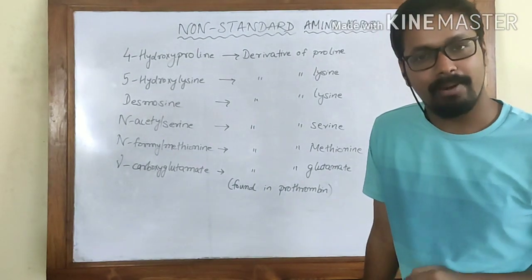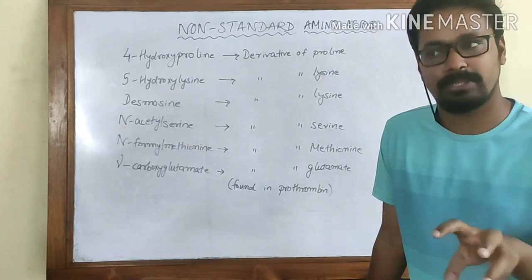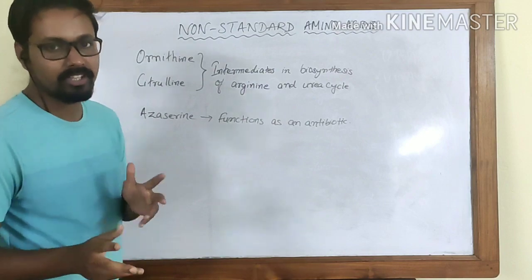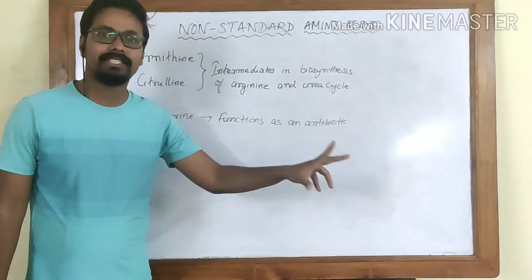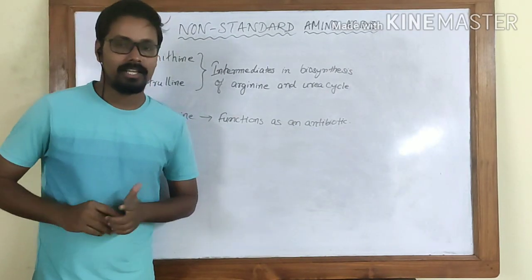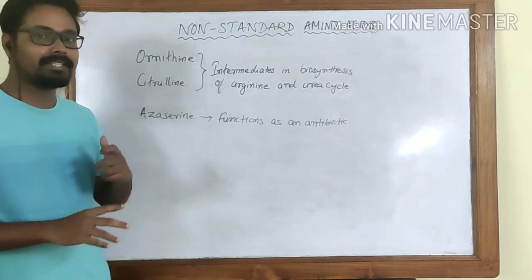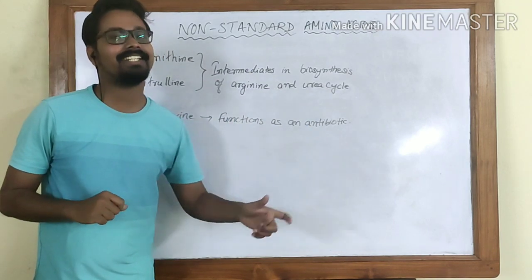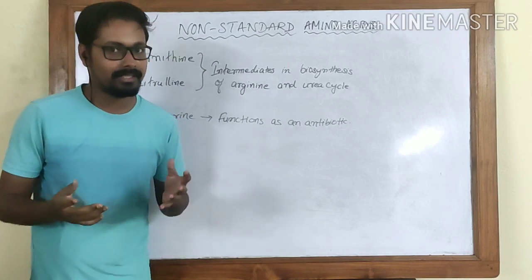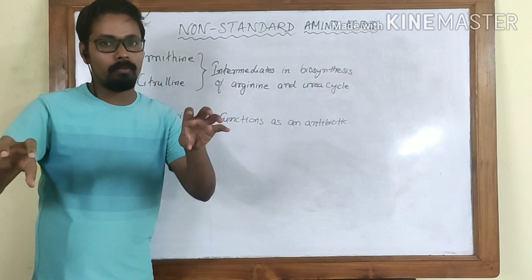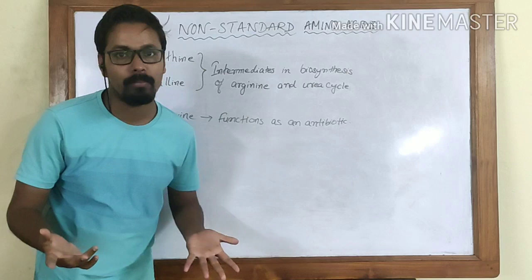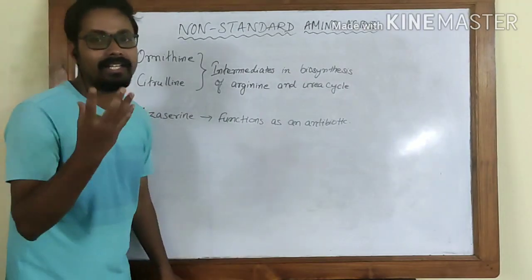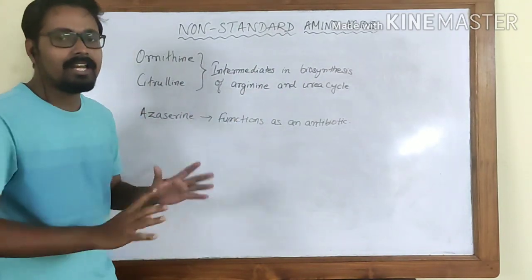Now let us look into some other non-standard amino acids that have specific functions for specific areas of our body. Ornithine and citrulline are key intermediates in the formation of arginine and also in the urea cycle. If you have studied the urea cycle, you will find citrulline as one of the compounds in it. Intermediates are the middle compounds that do not stay as final products — they form mid-reaction and then convert to something else. So ornithine and citrulline are intermediate compounds in the biosynthesis of arginine and in the urea cycle.